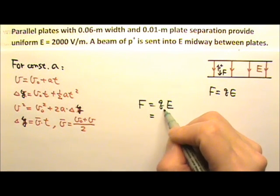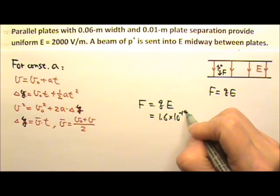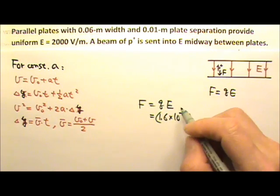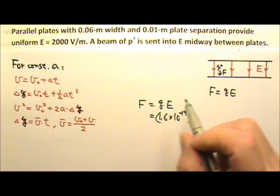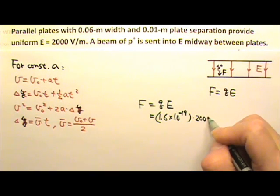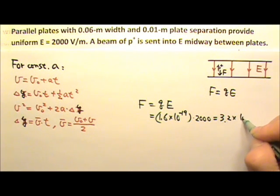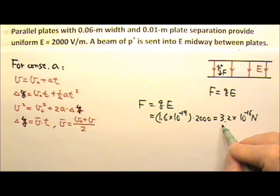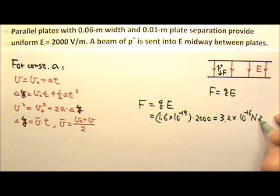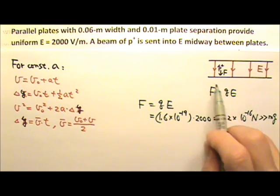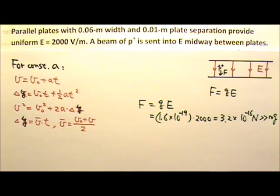So it's 1.6 times 10 to the negative 19th coulomb. That's the charge. And the electric field is 2000. So if we do this, we'll get the electric force to be 3.2 times 10 to the negative 16th newtons. By the way, this force compared to the mg of a proton, it is much, much bigger than the mg of the proton. That's why in this problem we can ignore the mg of the proton.